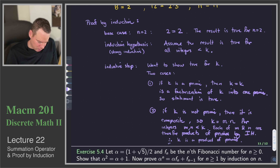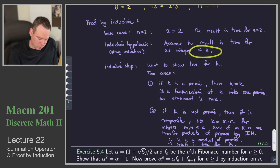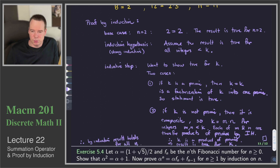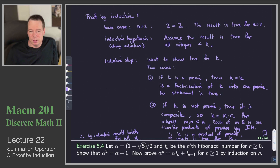The result is true for k. We assumed the result is true for integers less than k, and now the result is true for k. Therefore, by induction, the result holds for all n greater than or equal to 2.